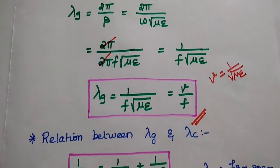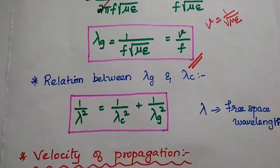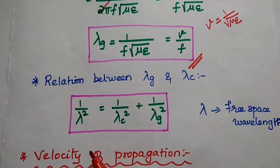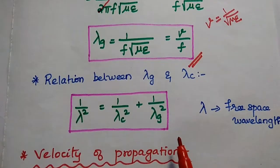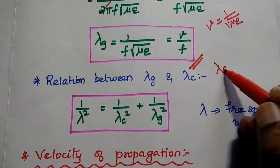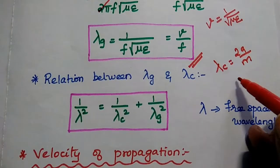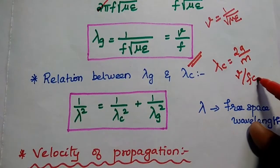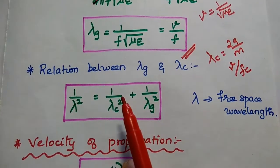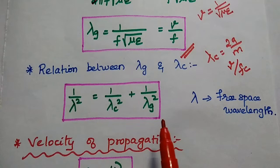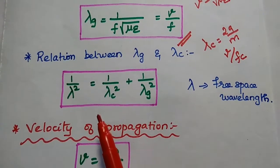The relation between the guided wavelength and cutoff wavelength is given by 1/λ² = 1/λc² + 1/λg², where λc = 2a/m or v/fc. Here λ is the free space wavelength.